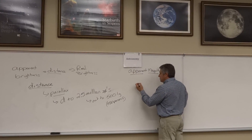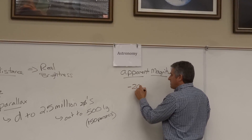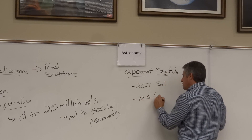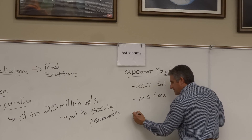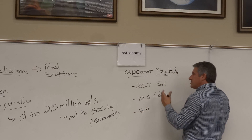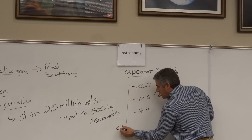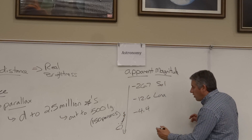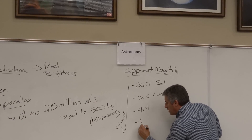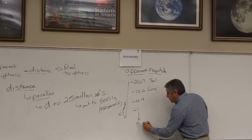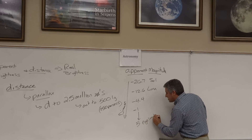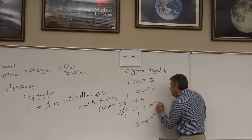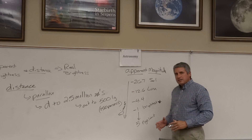The apparent magnitude scale ranks things like the sun, which has a magnitude of minus 26.7 — the brightest thing in the sky — the full moon at minus 12.6, and Venus at minus 4.4. Notice something about the apparent magnitude scale: as things get dimmer, the numbers get larger. Stars run anywhere from a magnitude of about minus 1 all the way down to about 5, which is about the limit you can see with your eye. The scale is used to quantify the brightness of objects.